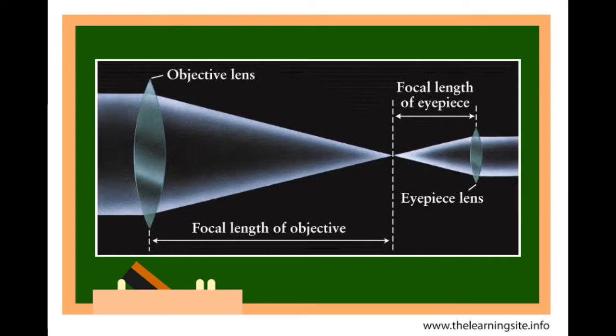The objective is the optical element that gathers light from the object being observed and focuses the light rays to produce a real image. Objectives can be a single lens or mirror or combination of several optical elements.